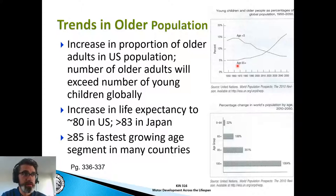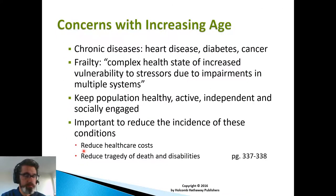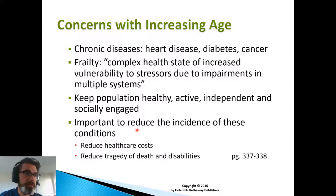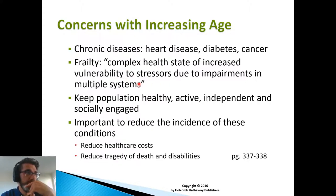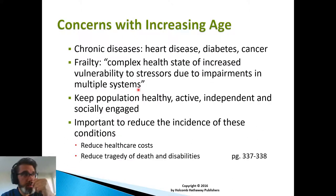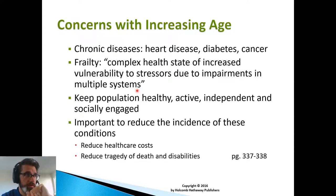We have more older adults predicted — almost double the percentage of older adults to children within the next 30 years, by 2050. This can be problematic, especially since there will be fewer newer adults to take care of them. One possible solution is creating policies and programs that help them maintain a normal standard of care and continue to participate in activities of daily living without needing a caretaker. Concerns with increasing age include more chronic disease, heart disease, diabetes, cancer, and increased frailty — a complex health state of increased vulnerability due to impairments in multiple systems: vision, muscular, skeletal, sensory, cognitive, and emotional.